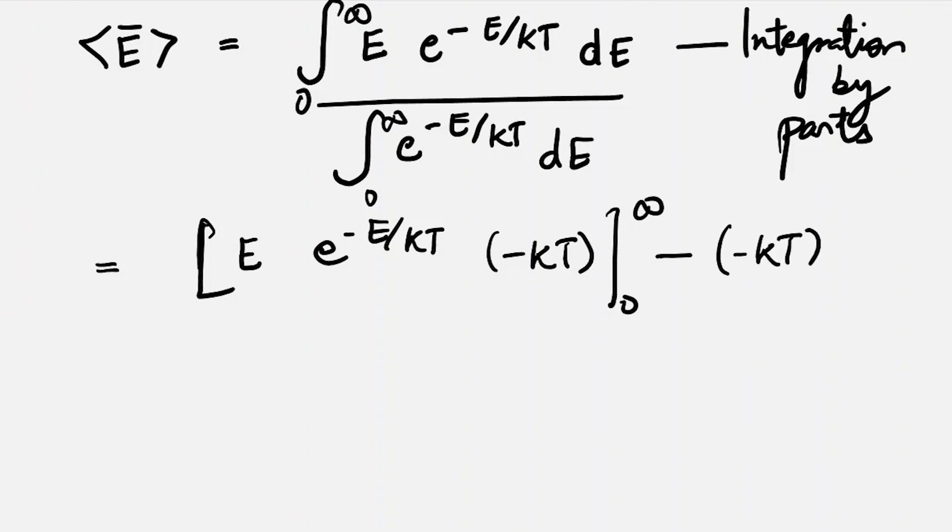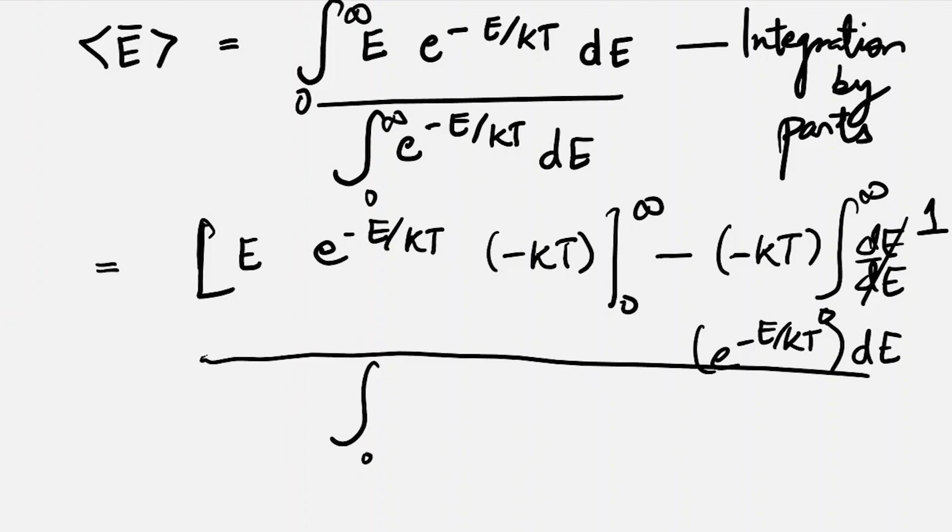Taking out the minus kT and differentiating the first function E, we get dE from zero to infinity, and then the second function is kT dE. This is going to be 1, and in the denominator we have the whole integration of e to the minus E by kT dE.